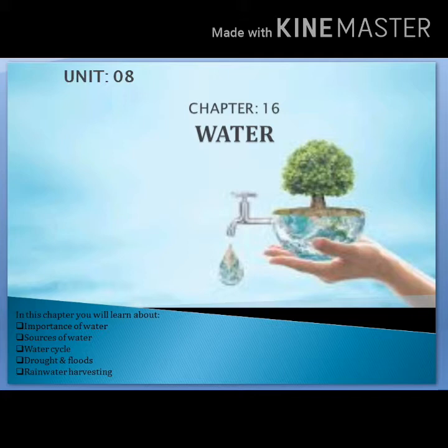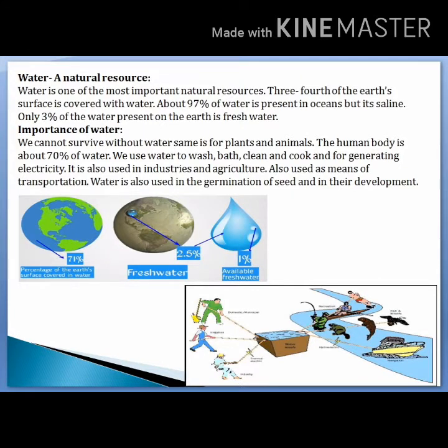Let's start with the chapter. Water is one of the most important natural resources. Three-fourths of the earth's surface is covered with water. About 97 percent of water is present in oceans, but it is saline. Only three percent of water present on the earth is fresh water.